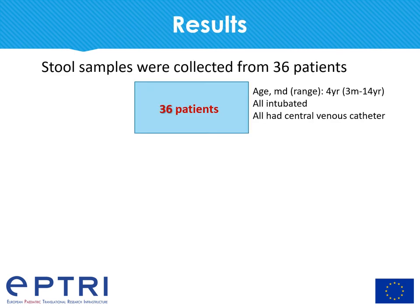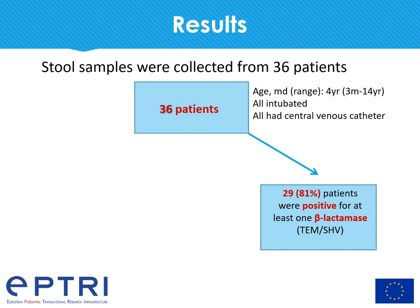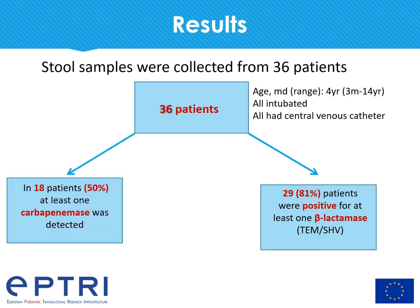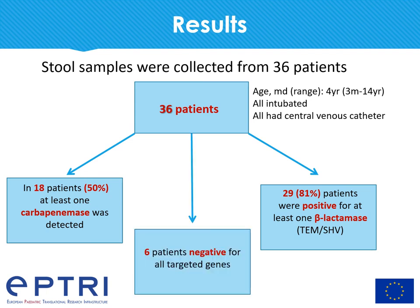Moving to the results: we had stool samples from 36 patients. The median age was four years, ranging from three months to 14 years. All children were intubated and all had a central venous catheter. 80% of these patients were positive for at least one beta-lactamase, TEM or SHV. Half were colonized with a carbapenemase, and only six patients were negative for all targeted genes.